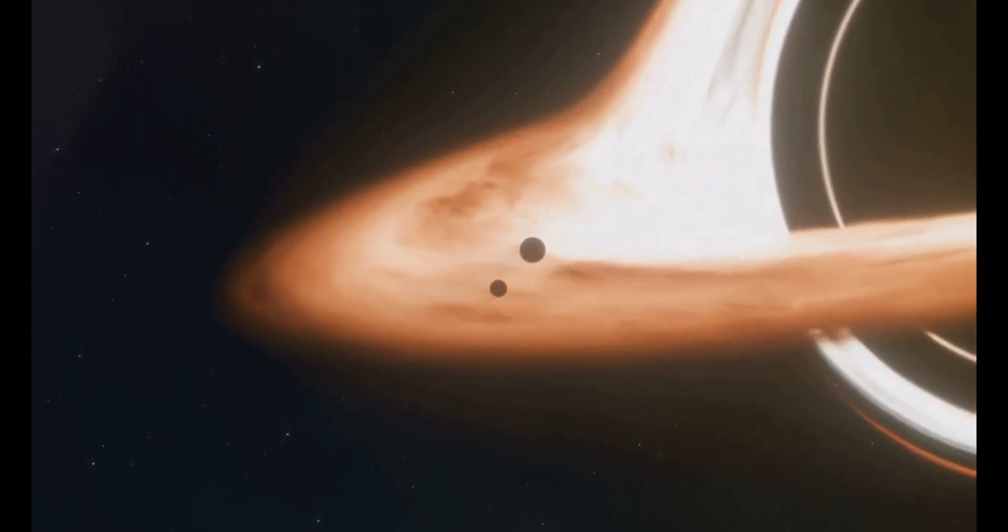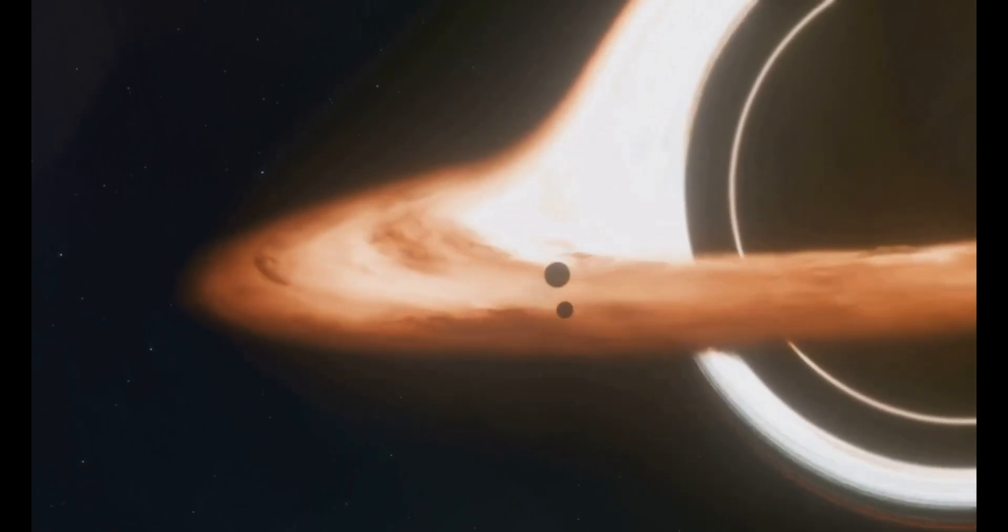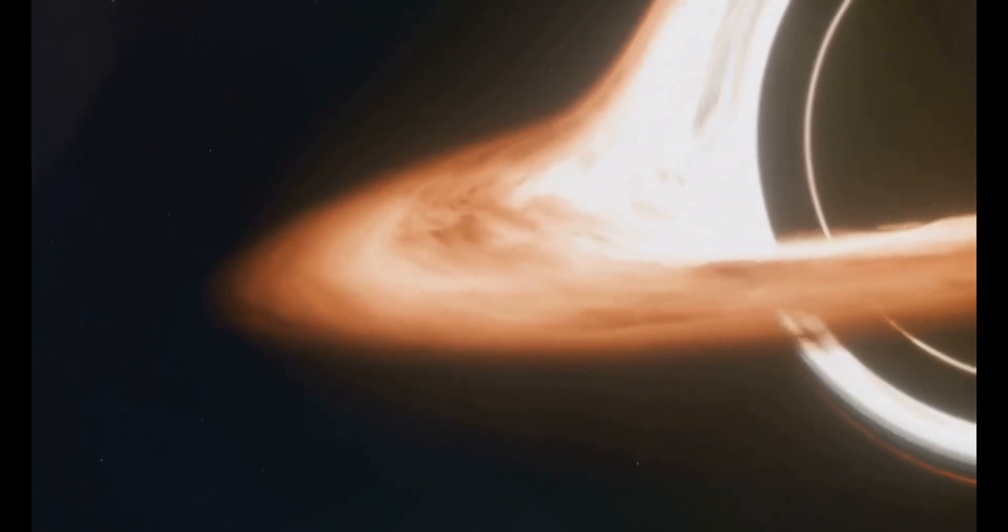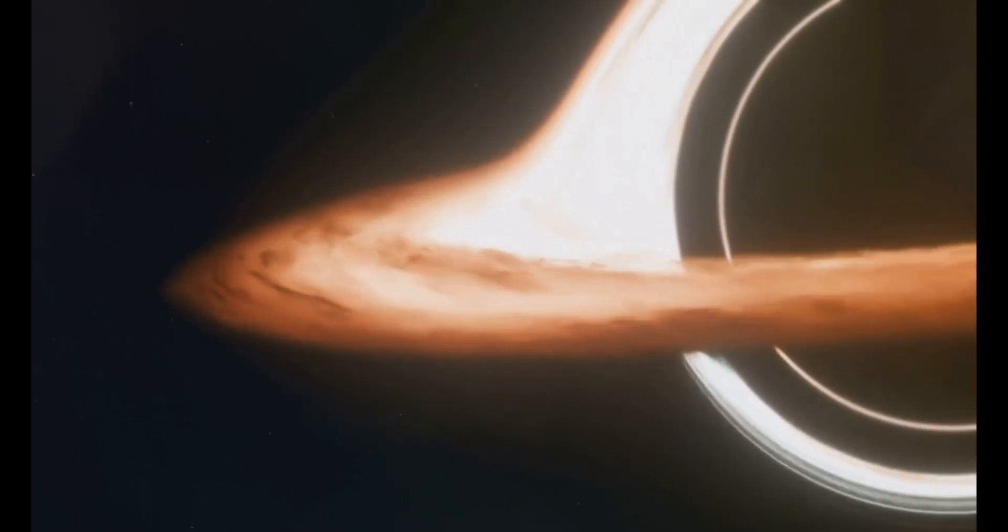The boundary around a black hole beyond which there is no return is called the event horizon. It's the point where escape becomes impossible. Once you cross it, there's no coming back. The black hole's pull is absolute and you would be lost to the depths of space forever.